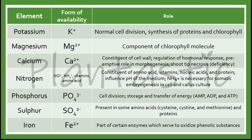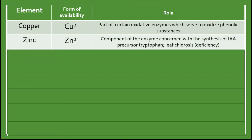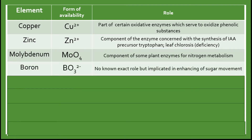Iron is part of certain enzymes which serve to oxidize phenolic substances. Copper is part of certain oxidative enzymes which serve to oxidize phenolic substances. Zinc is a component of enzymes involved in the synthesis of the IAA precursor tryptophan, and deficiency of zinc will lead to leaf chlorosis. Molybdenum is a component of some plant enzymes for nitrogen metabolism. Boron has no known direct role but is implicated in enhancing sugar movement in plants.